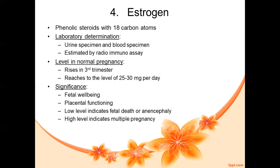Next is estrogen. Estrogens are steroids with 18 carbon atoms. The presence of estrogen can be determined from a urine specimen or blood specimen, and can also be estimated by radioimmunoassay. The level rises in the third trimester, reaching 25 to 30 milligrams per day by the end of the third trimester.